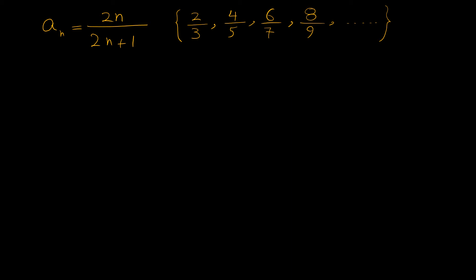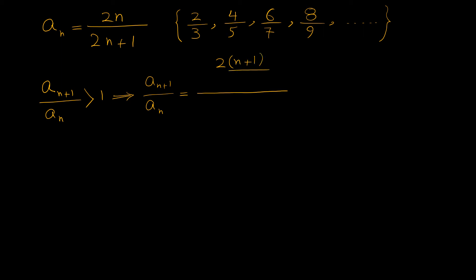Looking at the terms of this sequence, we can guess that it is an increasing sequence. To prove this, we have to show that a_{n+1} over a_n is greater than 1. We compute a_{n+1} by substituting n+1 into the formula. If we substitute n with n+1, we get 2(n+1) over 2(n+1)+1.